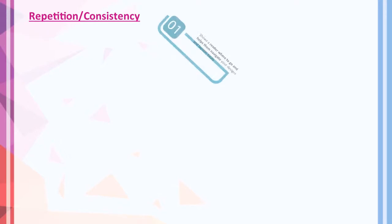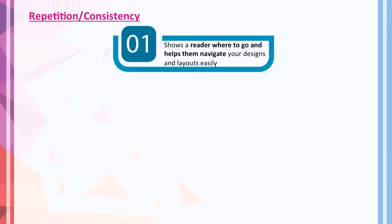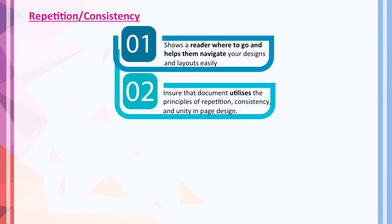Repetition, or consistency, refers to the arrangement and appearance of elements of the website. It shows readers where to go and helps them navigate your design and layout easily. It also ensures that the document utilizes the principles of repetition, consistency, and unity in the page design, especially for other sections of the website.